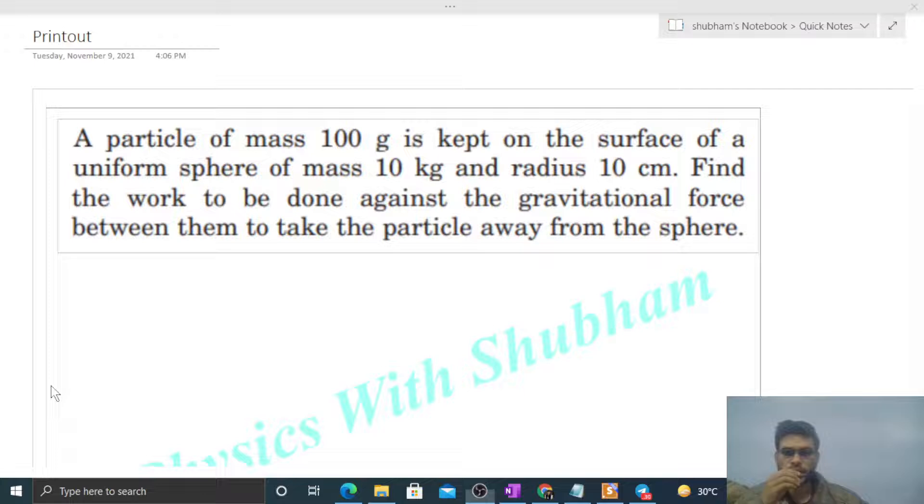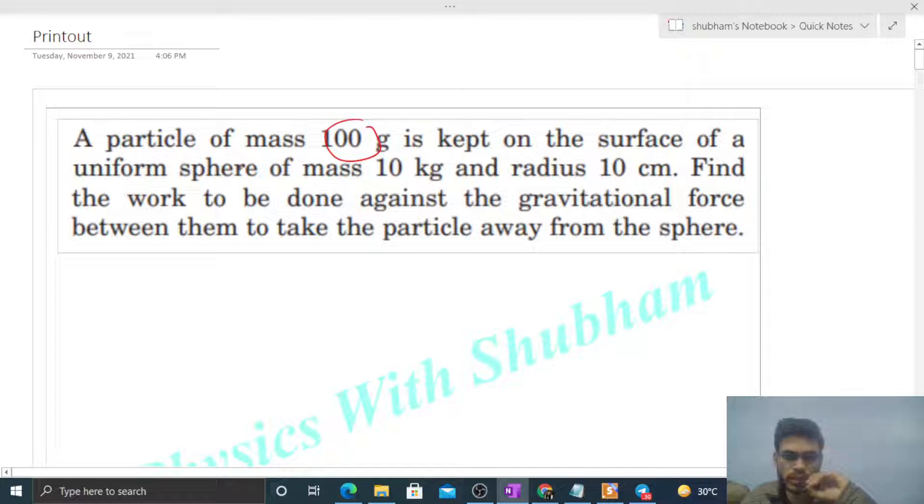Okay, hi everyone. Today let's discuss this interesting problem. It says a particle of mass 100 gram is kept on the surface of a uniform sphere of mass 10 kilogram and radius 10 centimeter. Find the work to be done against the gravitational force between them to take the particle away from the sphere.